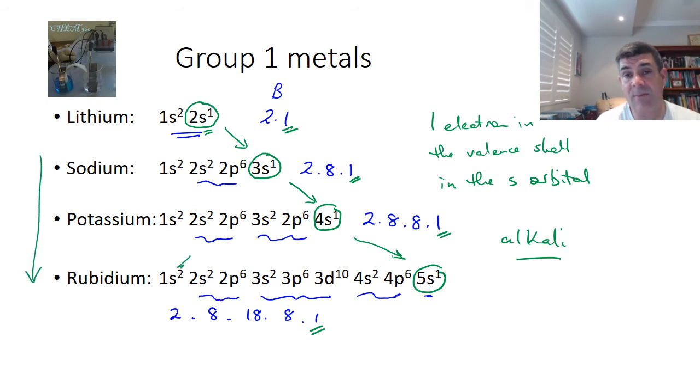What's most important about this is the fact that we have electrons getting further and further away from the nucleus. And therefore, the attractive force between the nucleus and those electrons is getting weaker and weaker. And so they get particularly reactive down towards the bottom of this group.